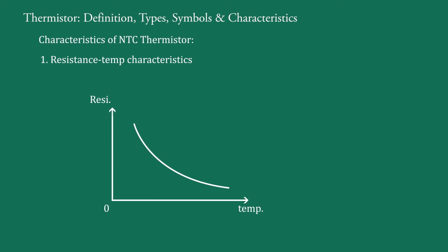The dependence of resistance on temperature can be approximated by the equation RT1 = RT2 × e raised to the power beta × (1/T1 − 1/T2), where RT1 is the resistance at temperature T1 in Kelvin, RT2 is the resistance at temperature T2 in Kelvin, and beta is the material-specific constant.